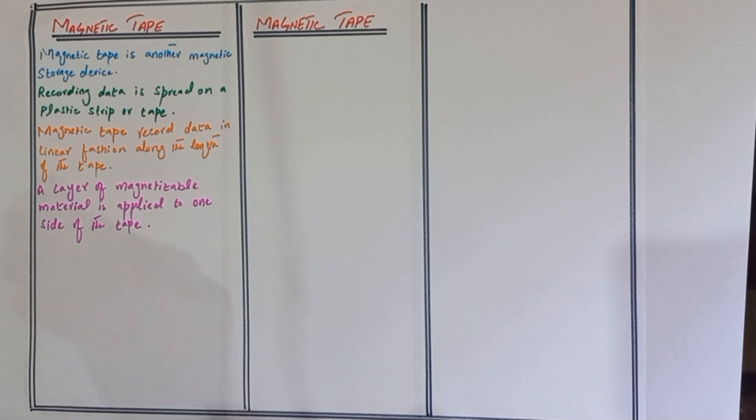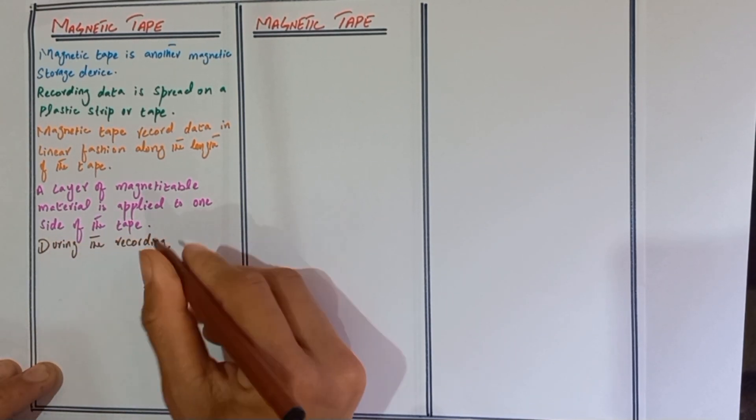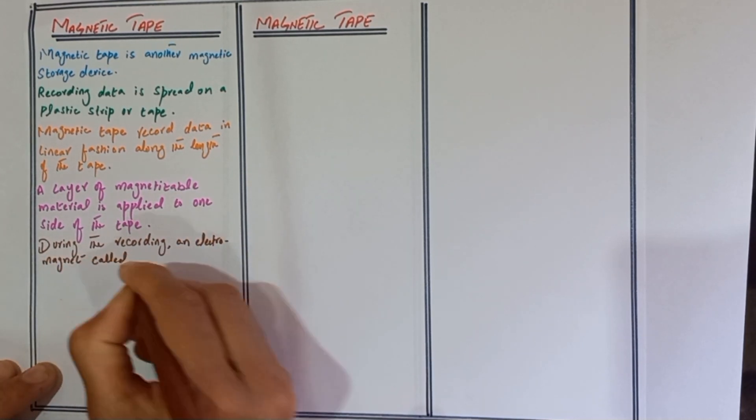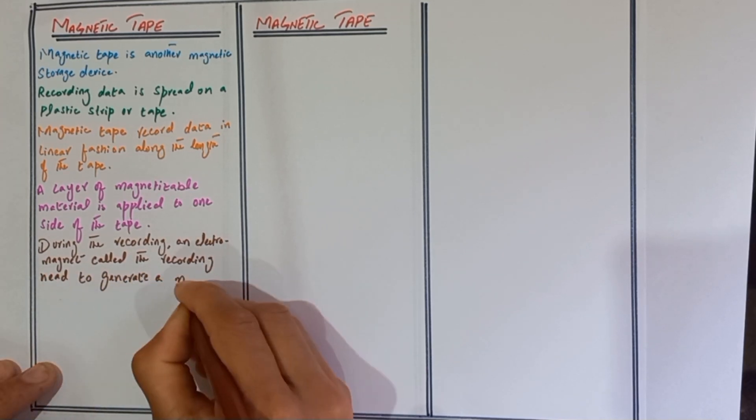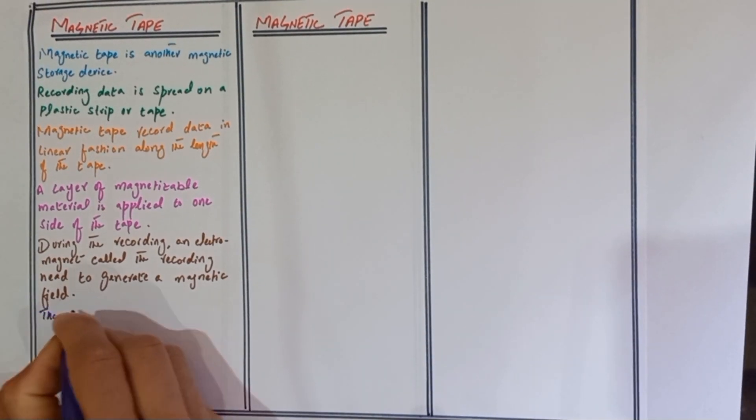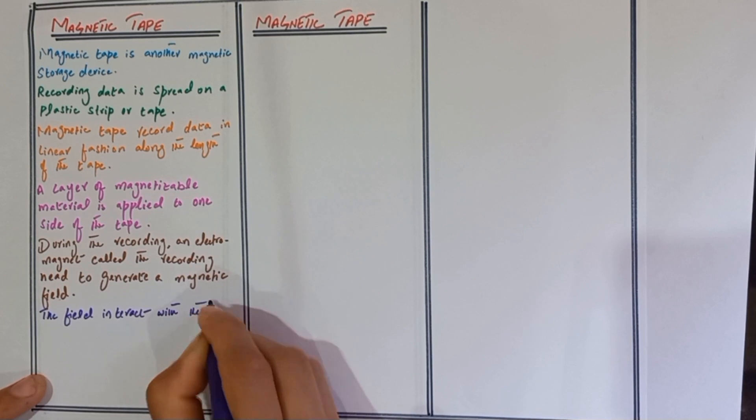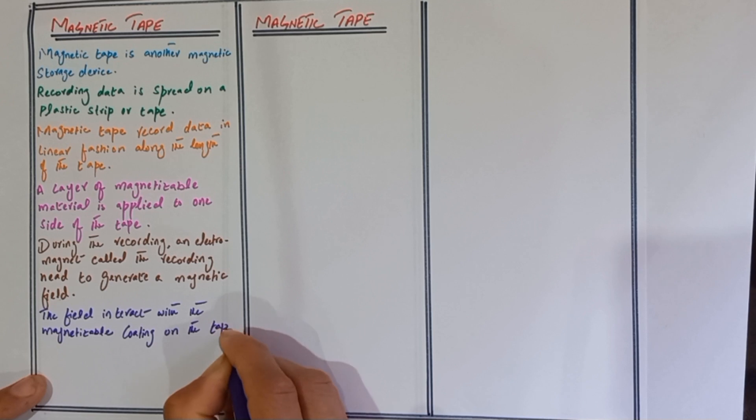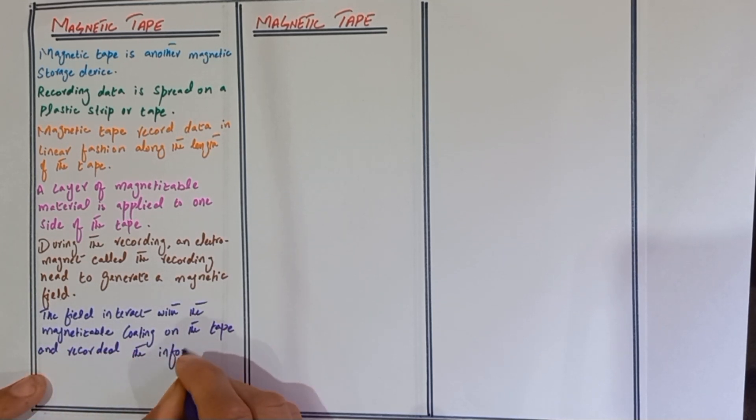During recording, an electromagnet called the recording head generates a magnetic field. The field interacts with the magnetizable coating on the tape and records the information.